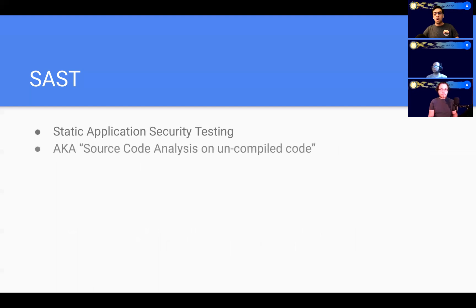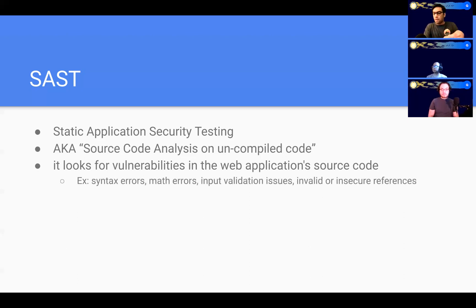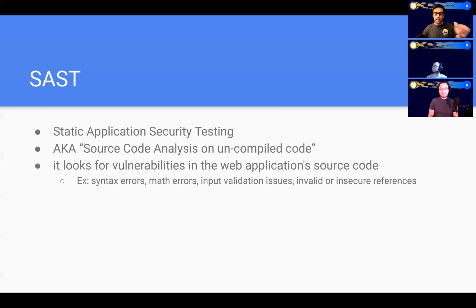Now let's move on to SAST. SAST stands for Static Application Security Testing, also known as Source Code Analysis on uncompiled code, although it can be run on compiled code as well. What SAST testing does is look for vulnerabilities in the actual source code without actually running it. This includes syntax errors, math errors, or input validation issues. For example, if you're assuming that user input will be a string instead of an object, SAST would flag that and tell you to put a check ensuring the input from the user — from an API or something — must be a string.